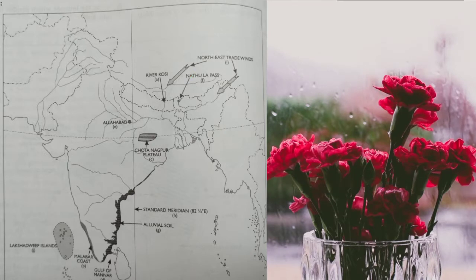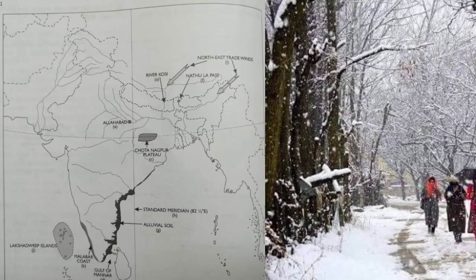Mark and name an area of alluvial soil in the peninsula. Mark with an arrow the Northeast trade winds — definitely show them in this area. Shade and name the Lakshadweep Islands — must draw and shade them.